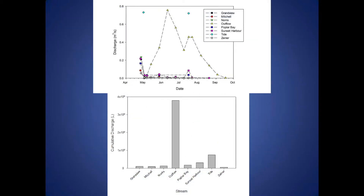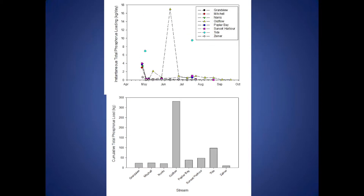Looking at discharge, you can see the fairly high discharge in spring and then the little peaks in summer. On Pigeon Lake the outflow discharge was fairly significant. We can calculate cumulative discharge — how much water went into the lake through each individual stream over the entire open water season — and from that calculate either instantaneous total phosphorus loads in kilograms per day, or total kilograms over the entire open season to compare all the different streams.